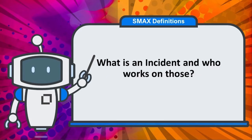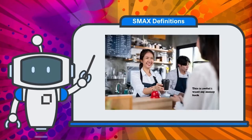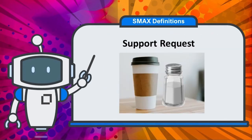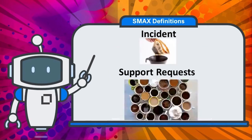An incident is recorded when there's an unplanned interruption to, or degradation in quality of, the service being provided. Going back to the coffee shop analogy: if a customer says the coffee tastes terrible, that's a support request. If the barista finds the customer put salt in their coffee instead of sugar, they can resolve it without an incident. But if the filter in the coffee machine is clogged, they create an incident to fix the machine itself. Once the incident is resolved, each affected customer is notified and can accept or reject the solution.